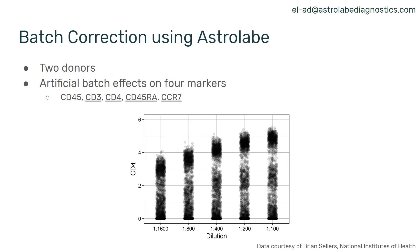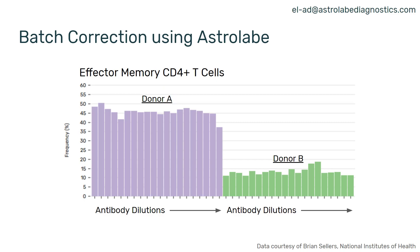I want to talk about batch correction using Astrolabe. We took the full dataset from Brian Sellers at the NIH, which has two donors with artificial batch effects on four markers — two donors and 16 conditions per donor — and ran it using Astrolabe. What we see is the frequency of effector memory CD4 T-cells in each donor: purple is donor one, green is donor two, and the x-axis shows the dilutions of the different antibodies. Astrolabe faithfully recovers the frequency of effector memory CD4 T-cells across all samples. There's no magic here — this uses the exact trick I mentioned, where Astrolabe clusters and annotates each sample separately and then combines them for follow-up statistics.